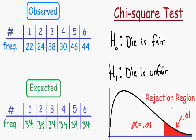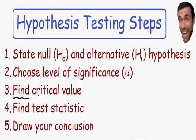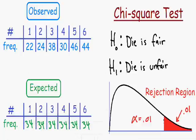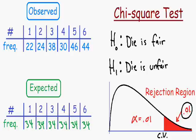Step number three says to find the critical value. The critical value is the point which separates the tail from the rest of the curve — it separates the red rejection region from the rest of the distribution. This will be a chi-square value since we're using a chi-square test. To find it, we need to use a chi-square table. One thing to keep in mind is the area in the tail, which is equal to 0.01.